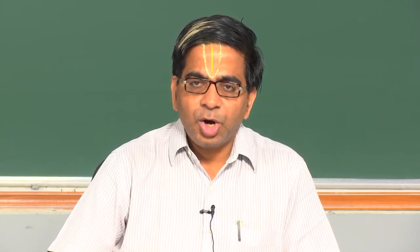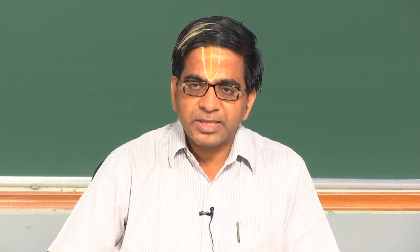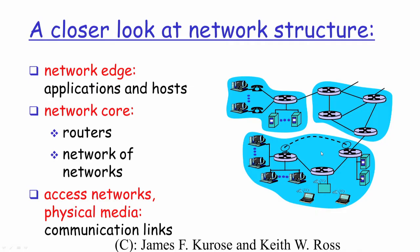In the networking world, when we say 'hop' we refer to one router device to another router device. When my packet goes from the first router to the second router, that is technically referred to as one hop. The network core consists of router devices responsible for forwarding packets from source to destination across many hops, depending on how many devices it has to cross.